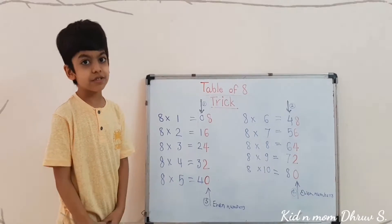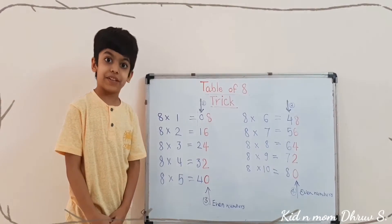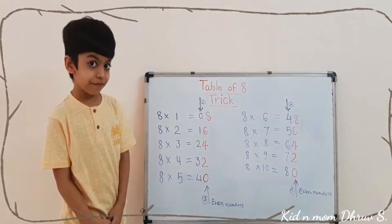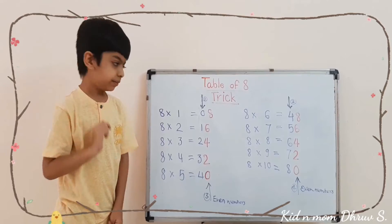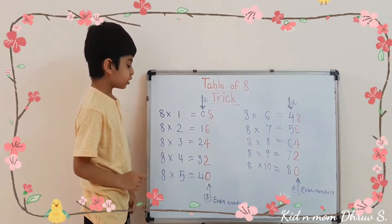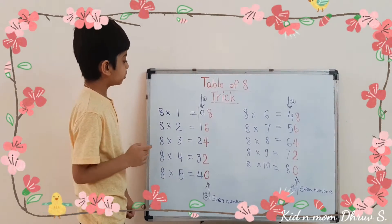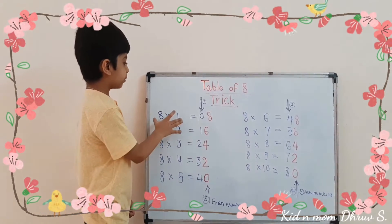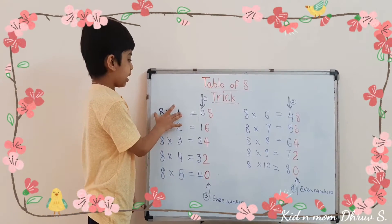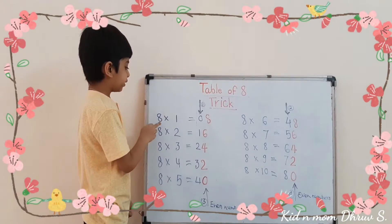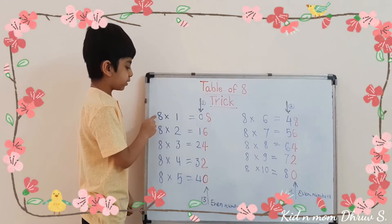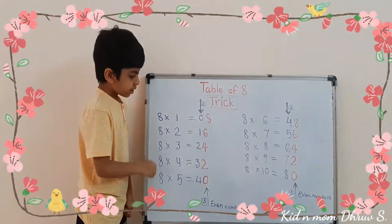Hey friends, my name is Wilson Aki. Today we are going to learn the table of eight. I have one trick. So first, from the left side, you have to write like this.